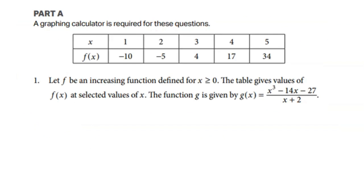Here's an example from the AP pre-calculus course exam description of exactly what FRQ number one is going to look like. They're given a function F shown in table form. We are told that F is an increasing function defined from X greater than or equal to zero. What that means is we're guaranteeing it's increasing — so the output values negative 10, negative 5, 4, 17, 34 are increasing throughout the entire function. We're also given a second function G in analytical form: X cubed minus 14X minus 27, divided by X plus 2. Exactly as they said, you're presented with different functions — in this case in table form and analytical form.